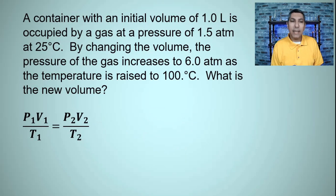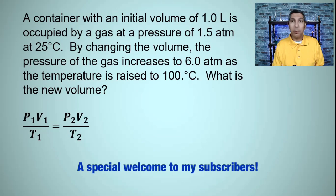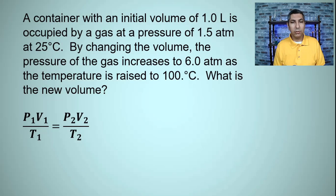Here's a problem. It says a container with an initial volume of 1.0 liter is occupied by a gas at a pressure of 1.5 atmospheres at 25 degrees Celsius. By changing the volume, the pressure of the gas increases to 6.0 atmospheres as the temperature is raised to 100 degrees Celsius. What is the new volume?